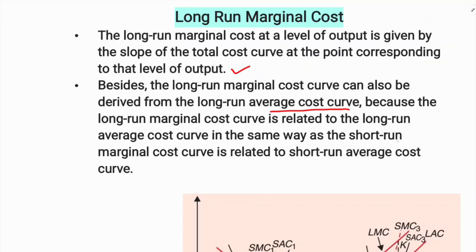The long-run marginal cost curve is related to the long-run average cost curve in the same way as the short-run marginal cost curve is related to the short-run average cost curve. Just as the short-run average cost curve relates to the short-run marginal cost, the long-run average cost curve is related to the long-run marginal cost curve.